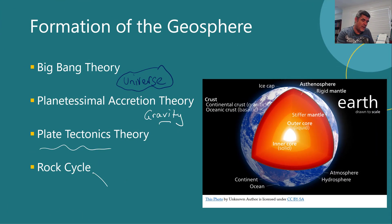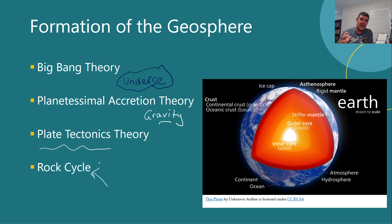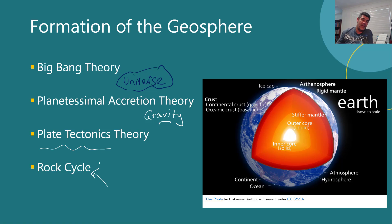Going hand in hand with plate tectonics is the rock cycle. There are three types of rocks worth mentioning: igneous, sedimentary, and metamorphic. Each of these different rock types can, over time, become another rock type depending on the different processes occurring. So we do see this rock cycle — the materials can cycle around through different types of rock, and can also cycle from the crust into the mantle and back up again. There are a lot of different processes occurring that affect the geosphere.